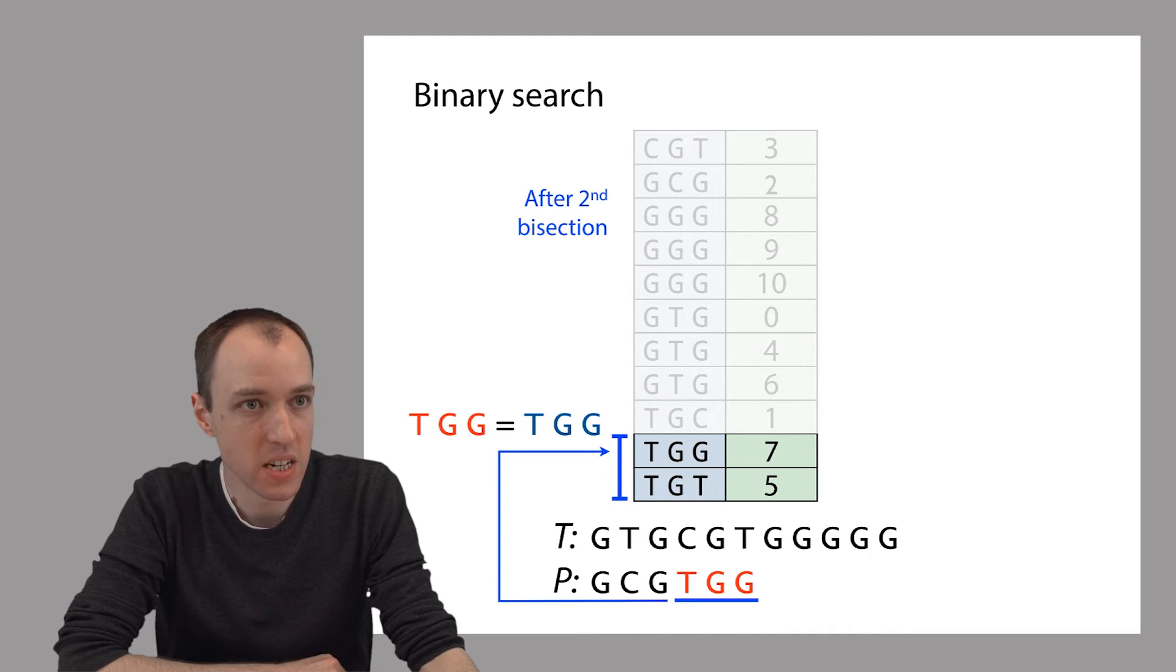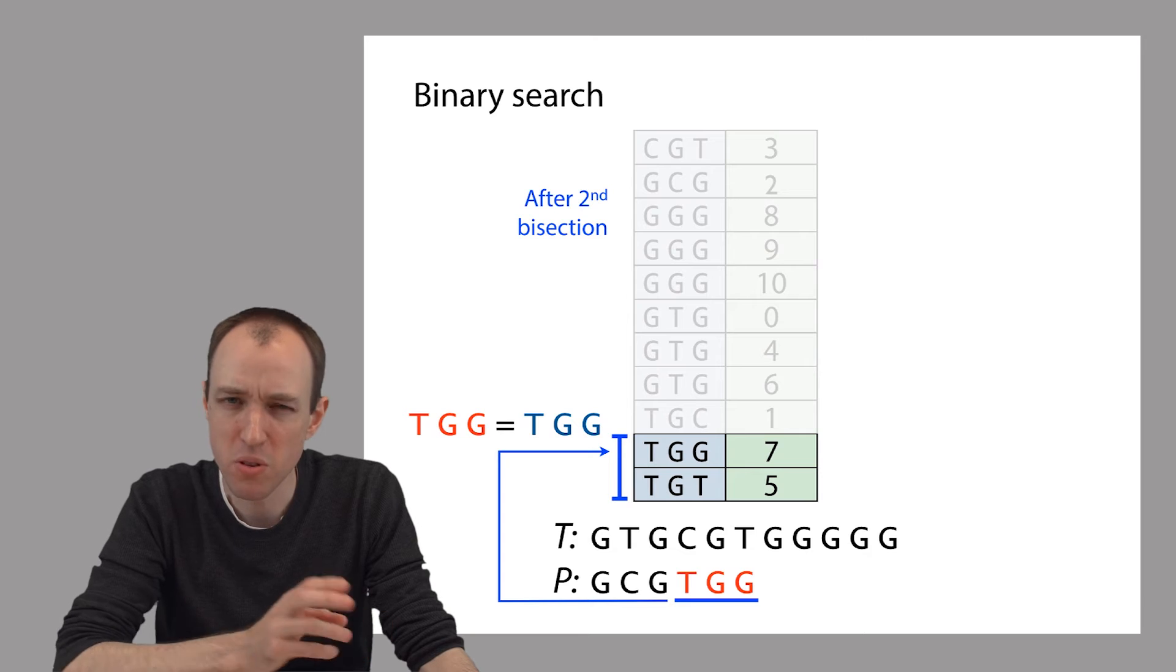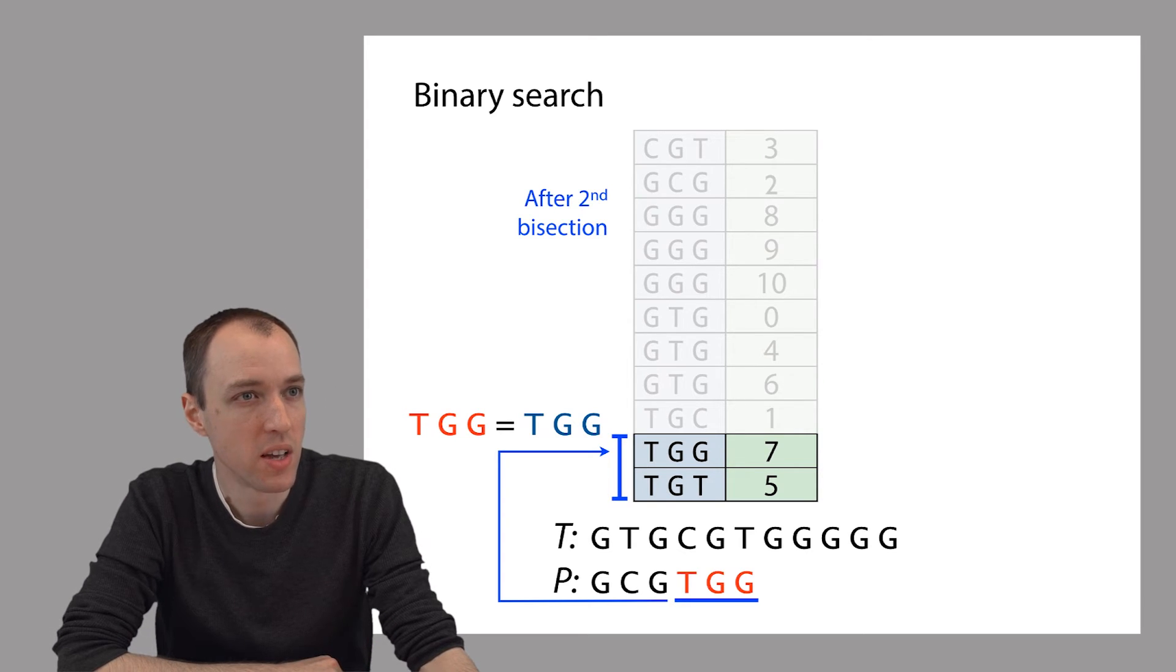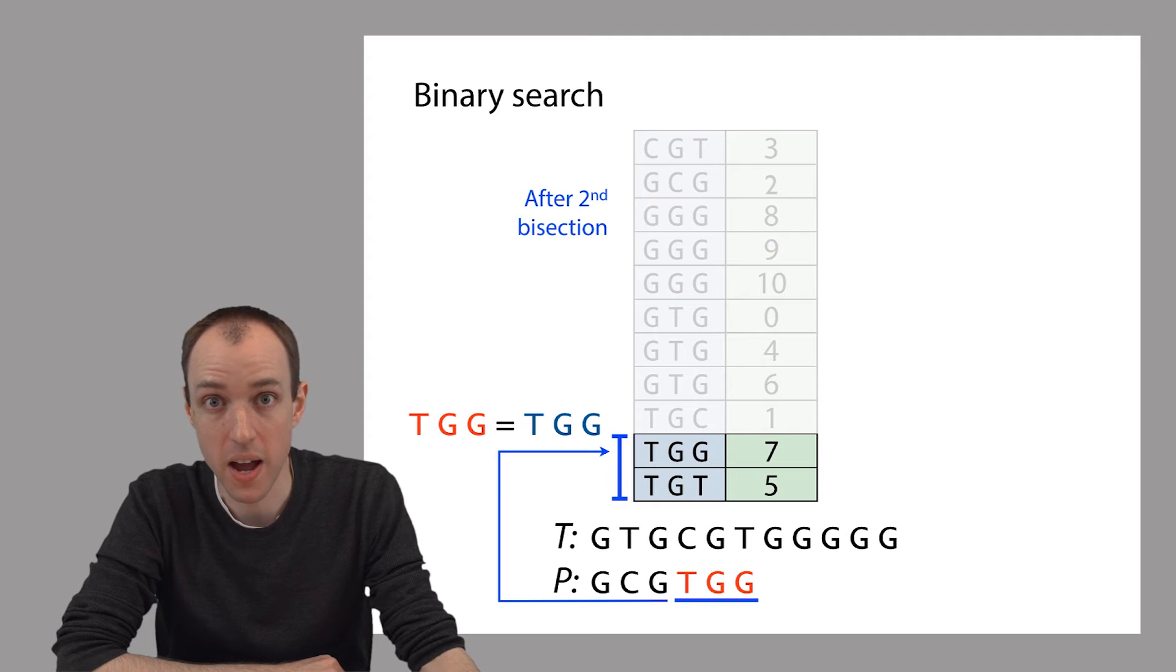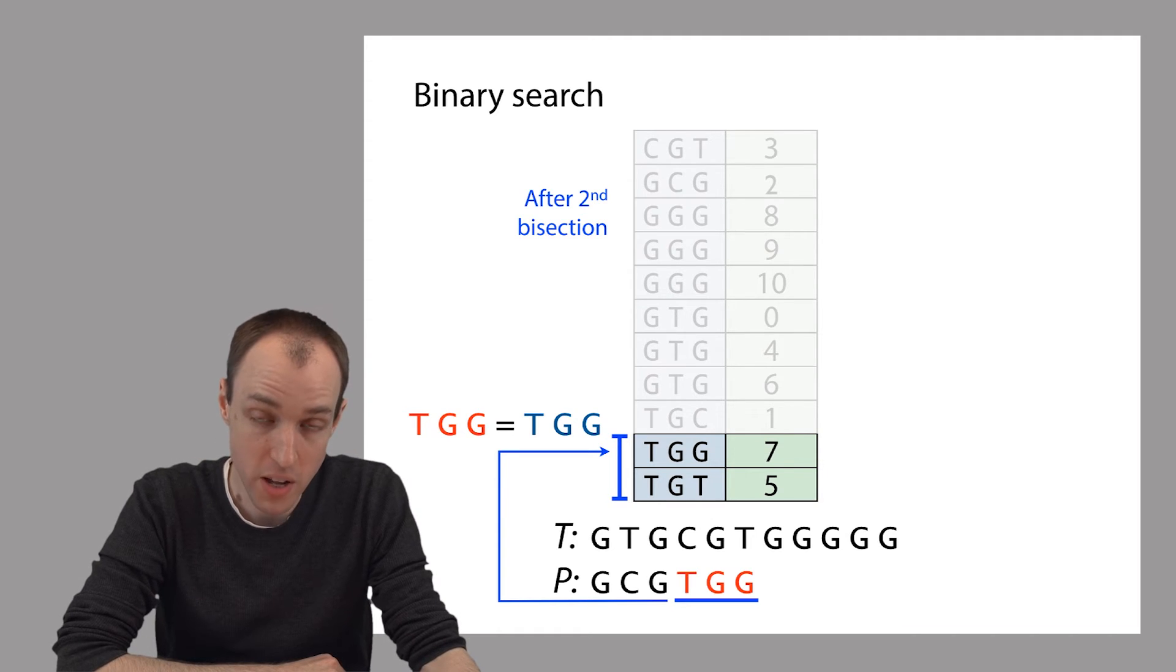And finally we can compare TGG to the middle element that we have here, but there's only two elements left. So let's just say we compare TGG to the first one, and we find that that's a match. So that match corresponds to an index hit. We wanted to find offsets where TGG occurs. We've now found the first one in the index, and it occurs at offset 7.